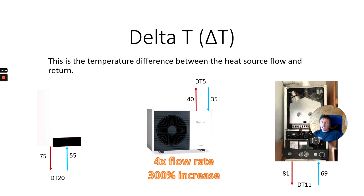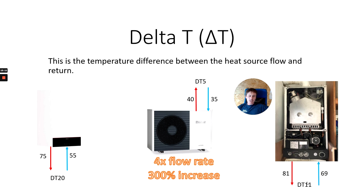Delta T is the difference between the flow and return on the heat source. For a new gas condensing boiler going out at 75°C and returning at 55°C, that's a 20-degree difference — DT20. For an air source heat pump working at DT5, going out at 40°C and returning at 35°C, we've got four times the flow rate — a 300% increase — which is why pipe sizing must change in most situations when fitting an ASHP onto a system that previously had a gas condensing combi. An old standard efficiency boiler pre-2005 going out at 81°C and returning at 69°C was working on a DT11.